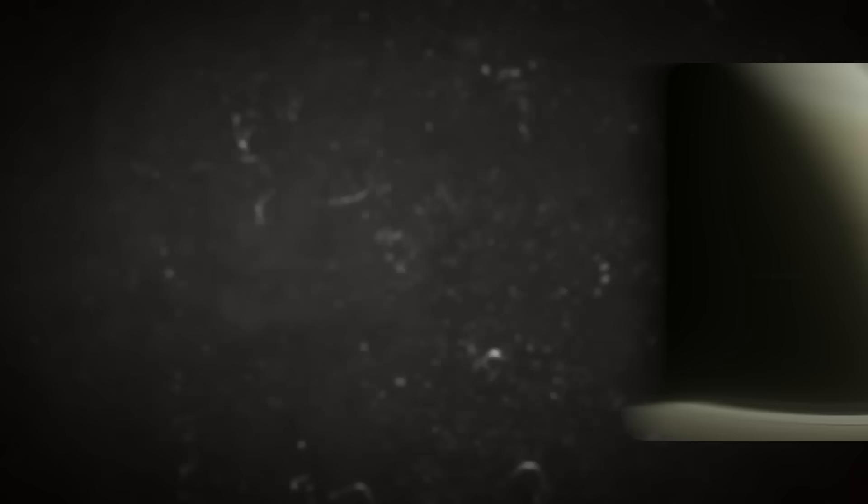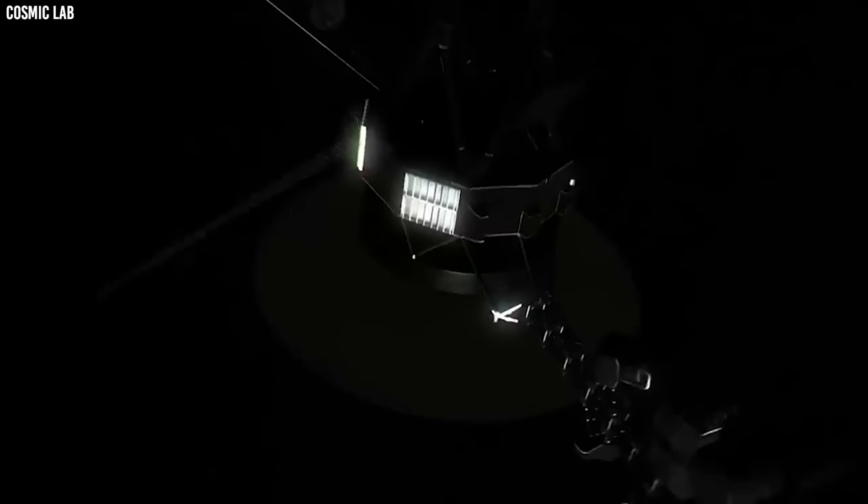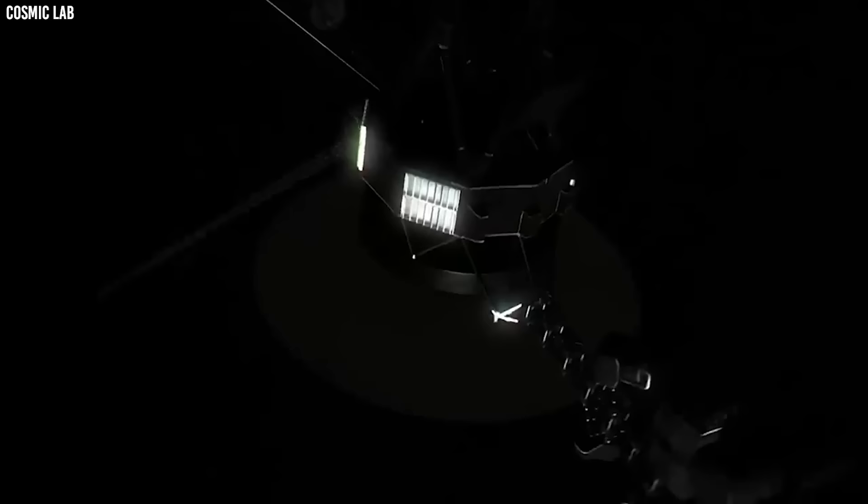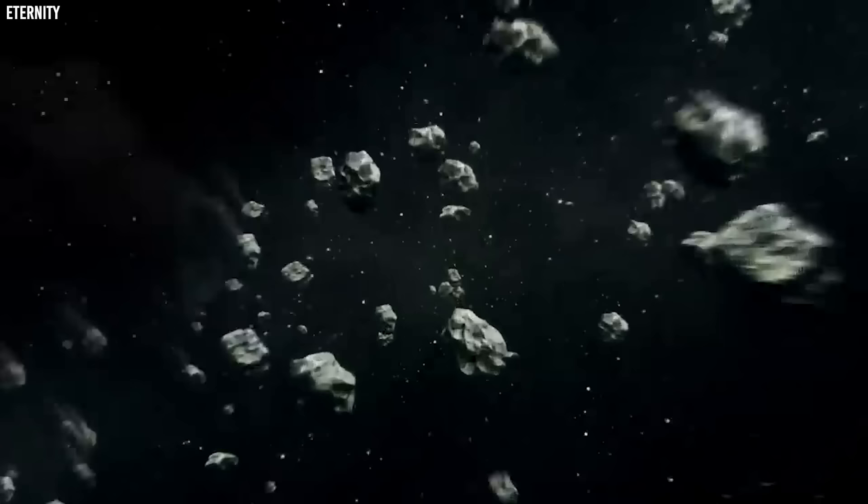Consider Voyager 2, which skillfully utilized gravity assist to traverse the realms of Jupiter, Saturn, Uranus, and Neptune. This trailblazing technique laid the groundwork for upcoming missions, empowering subsequent probes to navigate efficiently. Following in its footsteps, many missions have adopted the gravity assist strategy to economize on fuel and significantly curtail travel durations to destinations in the solar system's outer reaches. For example, New Horizons capitalized on Jupiter's gravitational pull to propel itself swiftly towards Pluto.